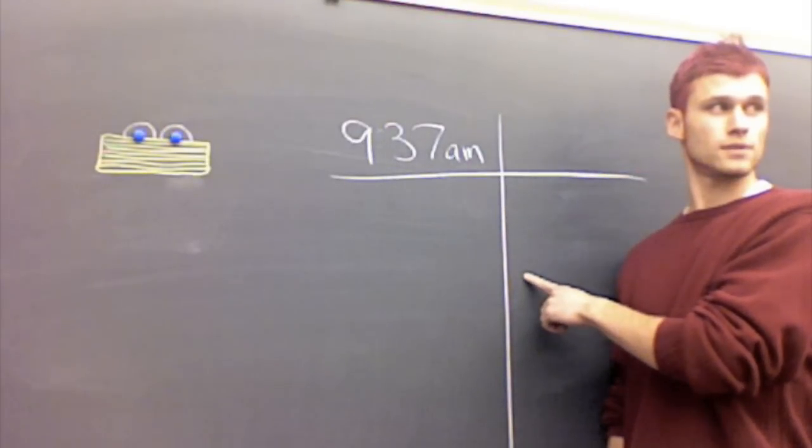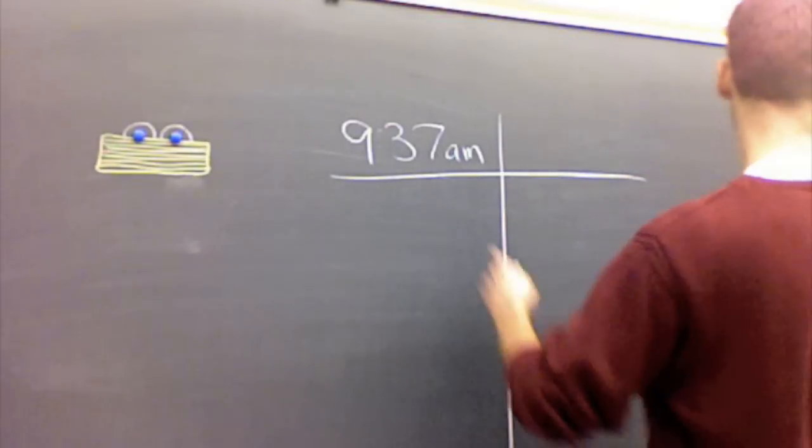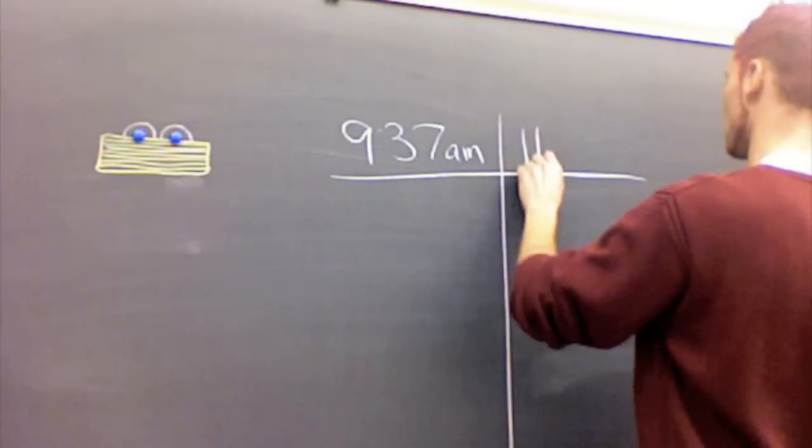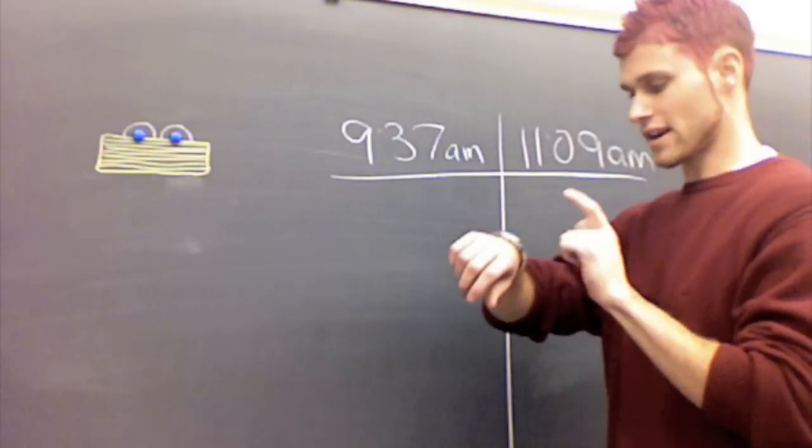This is what we call a T chart. My favorite chart, because it starts with a T. Okay, so 9:37 A.M. to 11:09 A.M., which is right now.